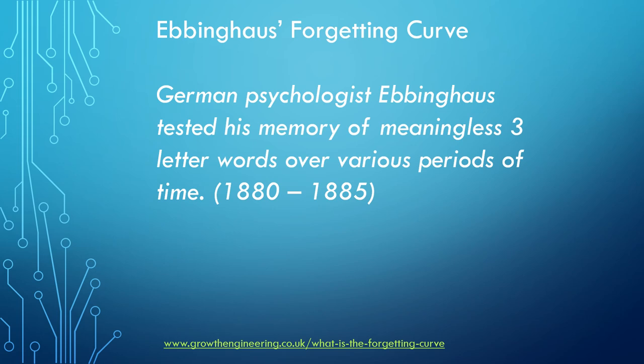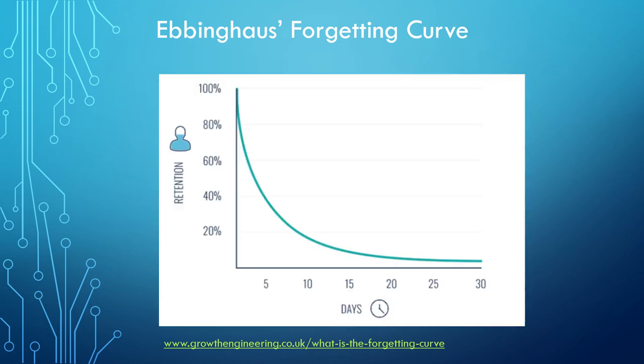So let's take a slightly closer look at how our brain retains information with time. German psychologist Ebbinghaus tested his memory of meaningless three letter words over various periods of time in the late 1880s and he graphed the results of the retention of these words over time. So a typical forgetting curve based on Ebbinghaus's results looks a bit like this. Our retention rapidly falls away at the start and then begins to level out as time increases.